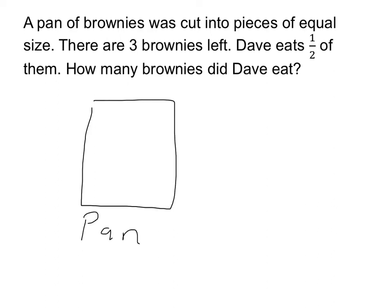It was cut into pieces of equal size. We're not told how many pieces the pan was cut into, but there are three brownies left. Let's draw in those three remaining brownies. I don't know how big those brownies are, but there are my three brownies that are left.